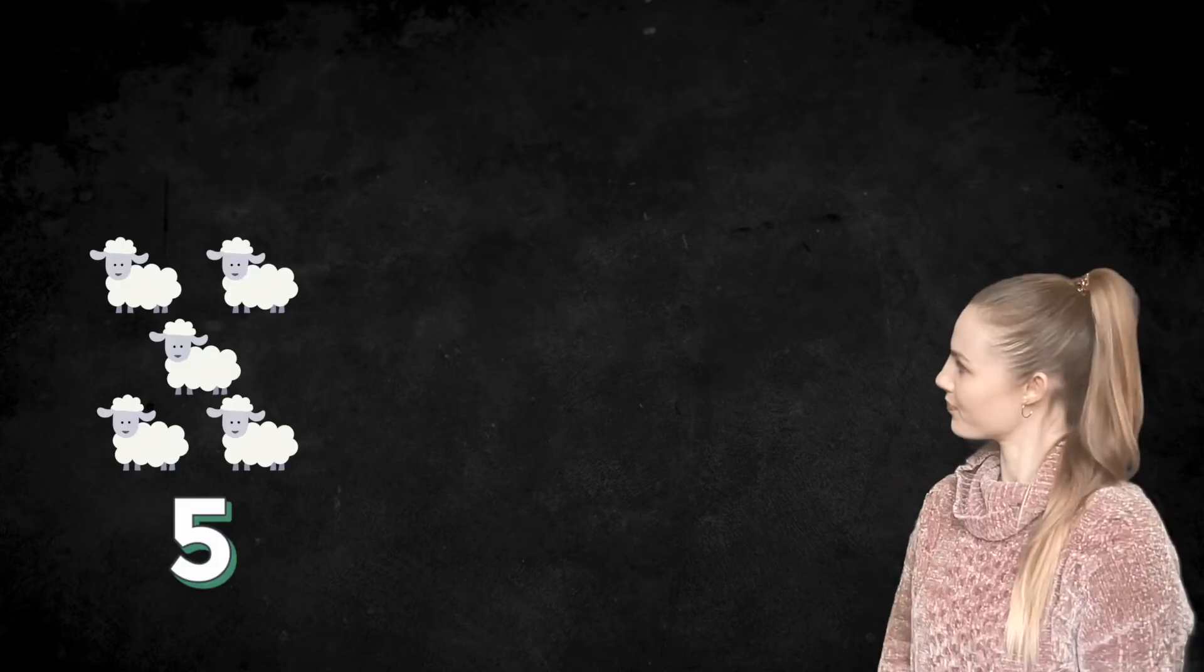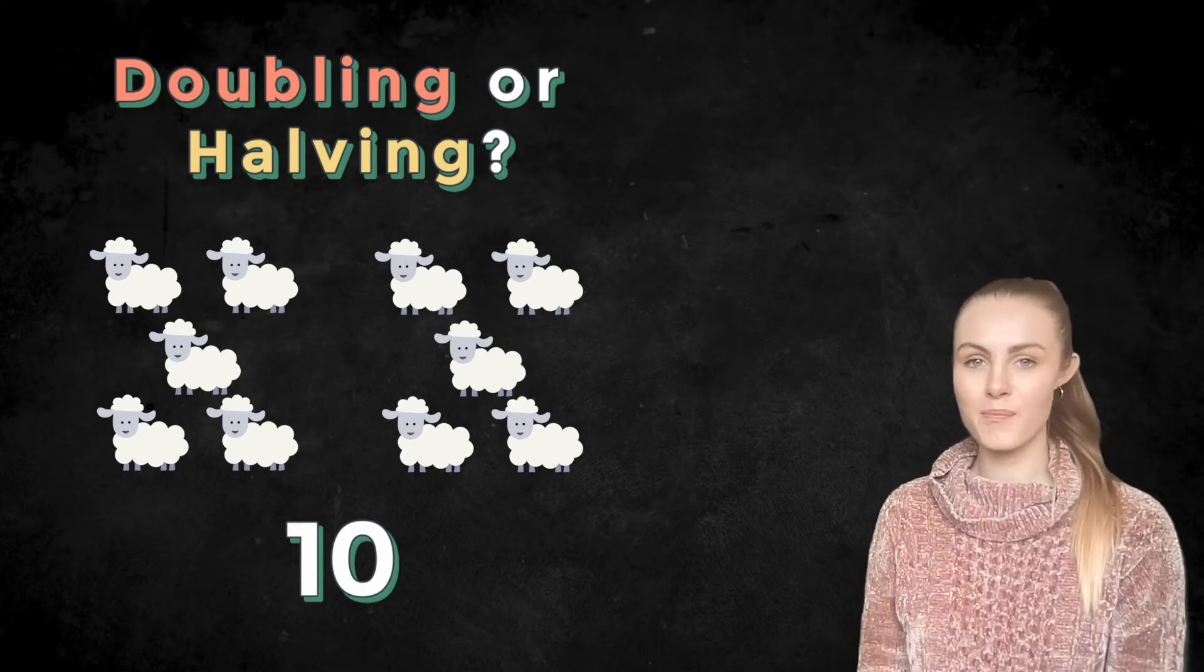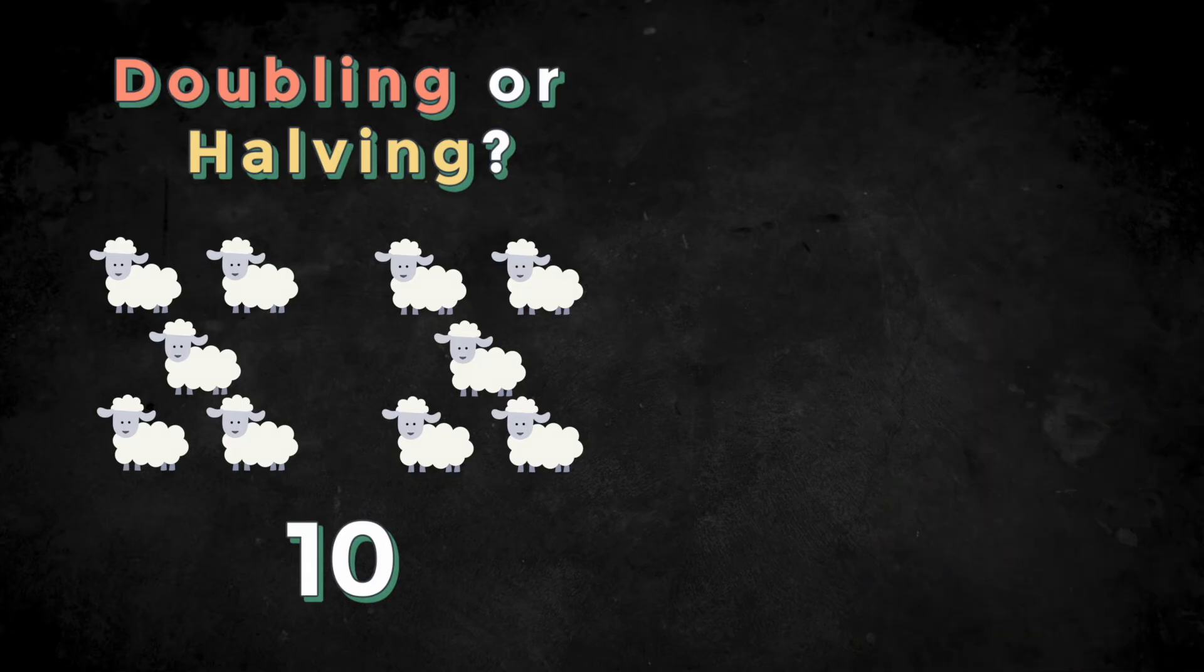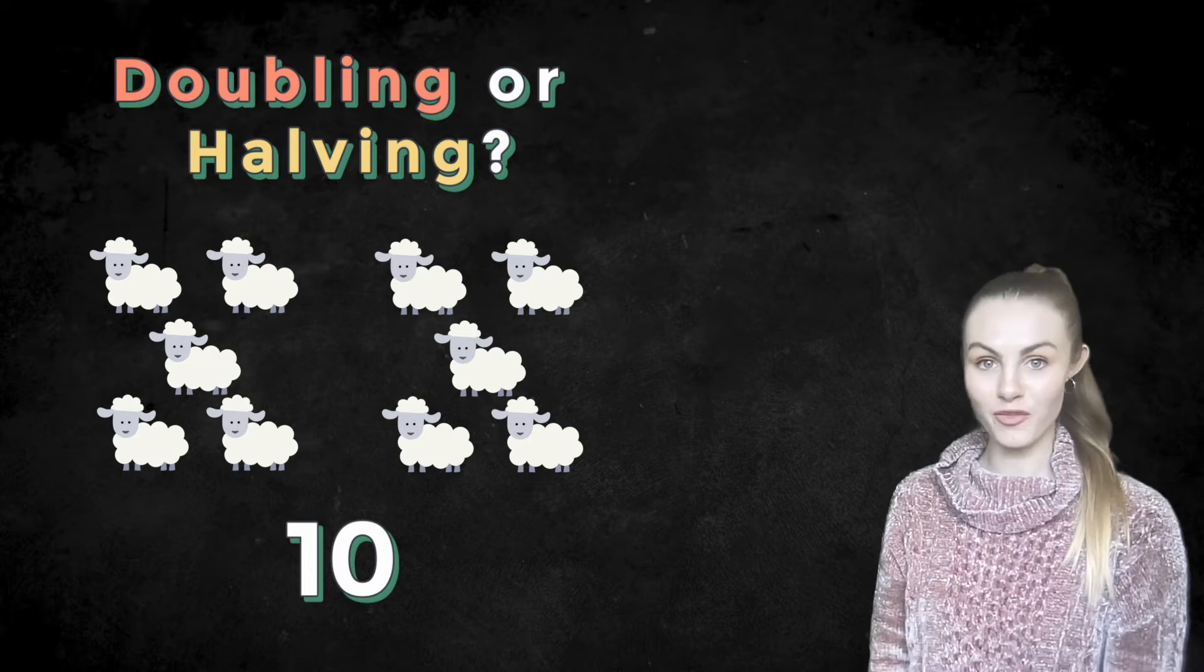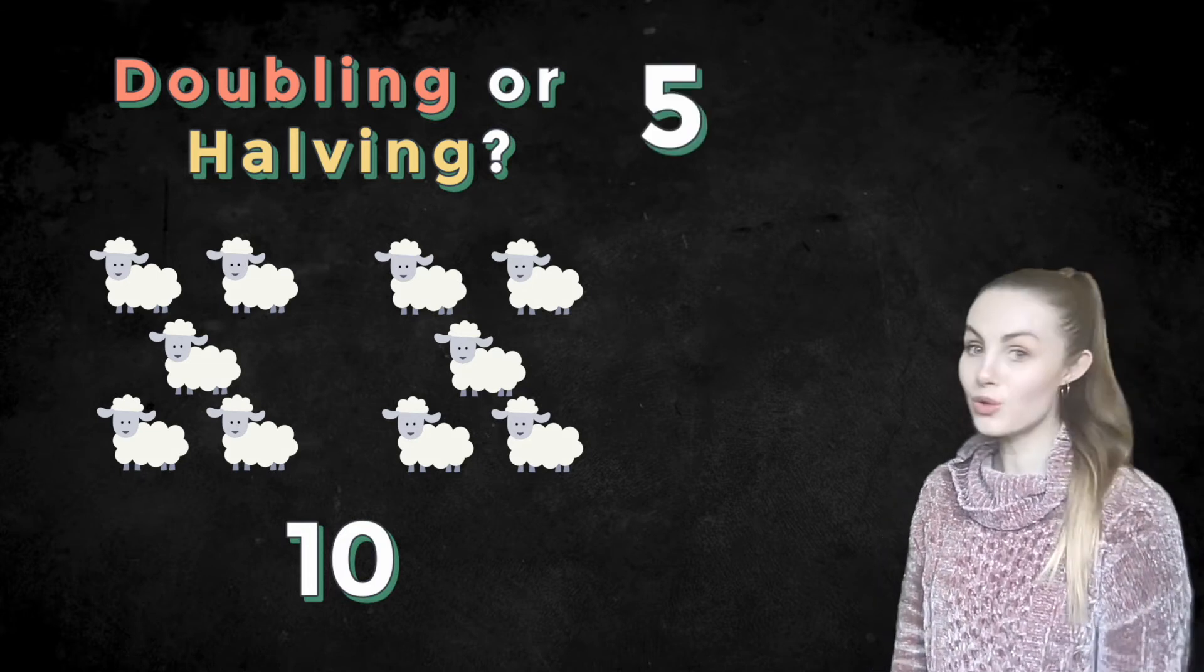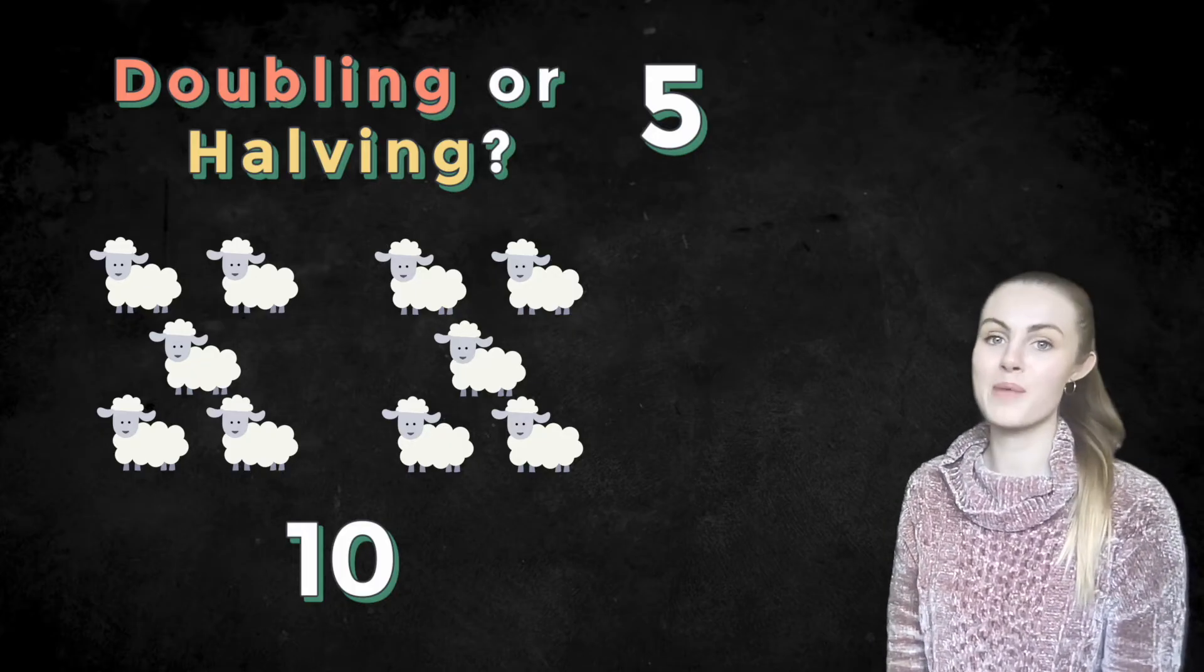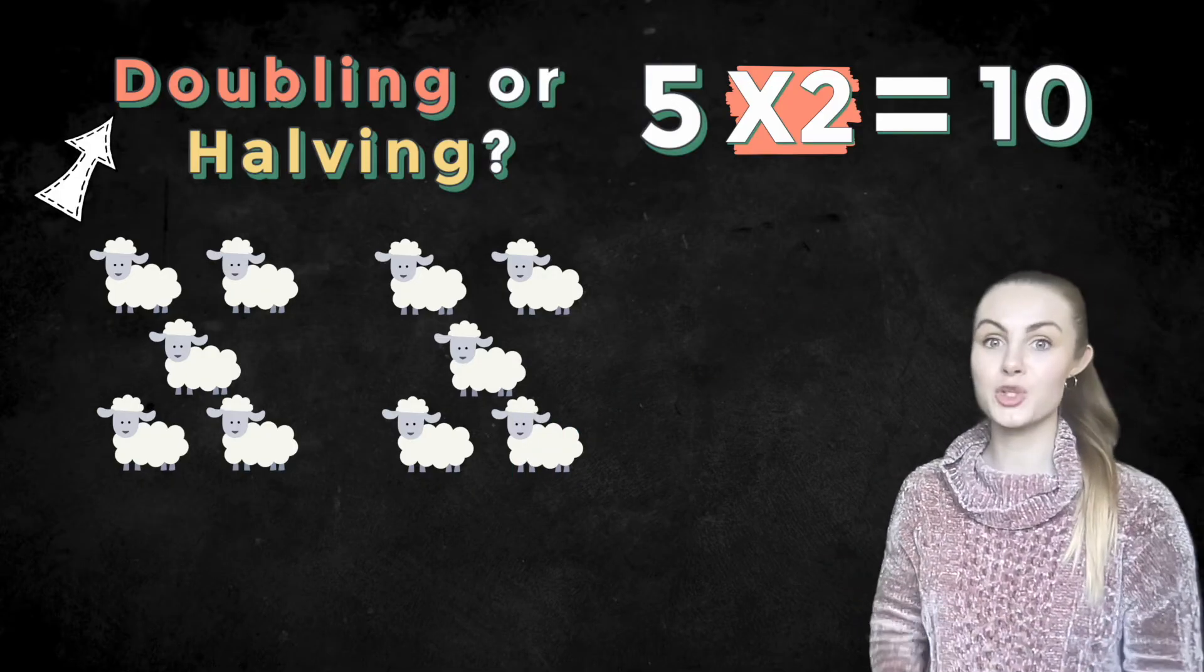Your turn now. I've got here five sheep. Now I've got 10 sheep. Have I doubled or have I halved the amount of sheep I started with? Either tell the screen or an adult. Pause the video now. Welcome back. Let's take a look at this one together. I started with five. I then had two lots of five and ended up with 10. That means that I did five multiplied by two equals 10. So I've doubled my number. I've made it twice as big.